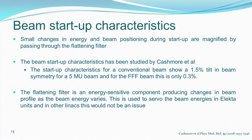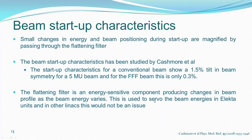Beam startup characteristics: when doing IMRT with small MUs, we were worried about startup characteristics. Small changes in energy and beam positioning during startup are actually magnified if you have a flattening filter. Without a flattening filter, this effect is much lower. A conventional beam shows about 1.5% tilt in beam symmetry for a 5 MU beam, whereas a Triple F beam shows only 0.3%. The flattening filter is an energy-sensitive component; Elekta even uses it for beam energy servo-control, so one must be mindful of that.